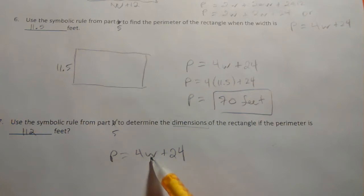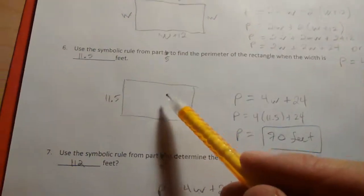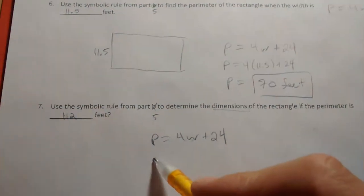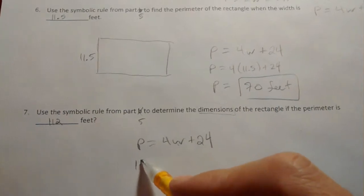Once we find the width, we can find the length, if the length is still 12 more than the width, which it is. Let's do it.